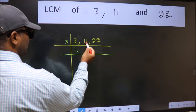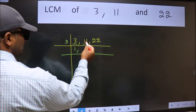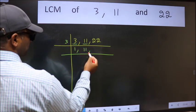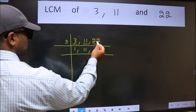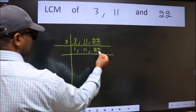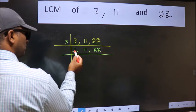The other number 11 is not divisible by 3 so we write it down as it is. The other number 22 is not divisible by 3 so we write it down as it is. Now we got 1 here.